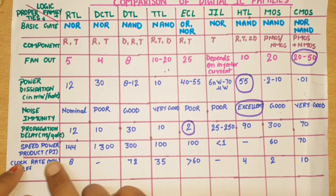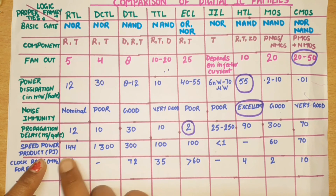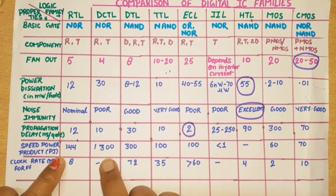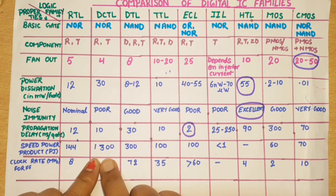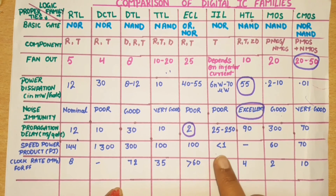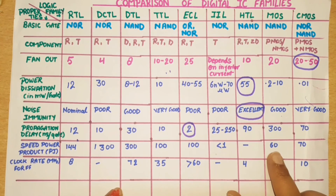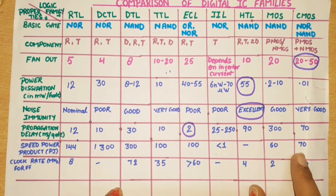Now Speed-Power Product, whose unit is picojoules. RTL is 144, DCTL is 1300, DTL is 300, TTL is 100, ECL is 100, and I2L is less than 1. MOS is 60 and CMOS is 70.